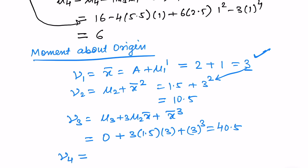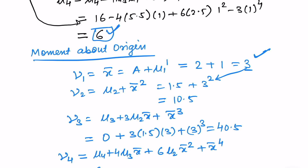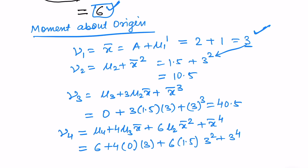For mu 4 prime, the relation is mu 4 plus 4 times mu 3 times x-bar plus 6 times mu 2 times x-bar squared plus x-bar to the power 4. Substituting: mu 4 is 6, mu 3 is 0, mu 2 is 1.5, and x-bar is 3. Solving this gives us 168.